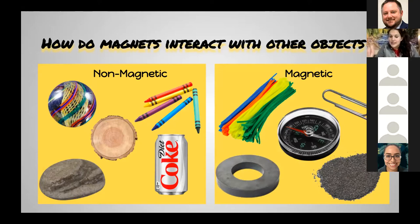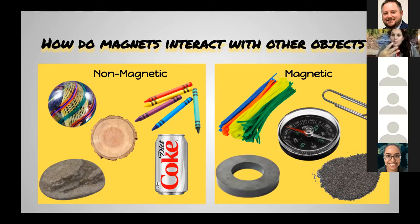You might be saying, Ms. Schramm, that aluminum soda can is metal too. Well, not all metals are magnetic. The main metals that are attracted to magnets are iron, nickel, and cobalt. Aluminum is not, so the soda can was kind of a trick. Not all metals are magnetic, but iron, nickel, and cobalt definitely are.